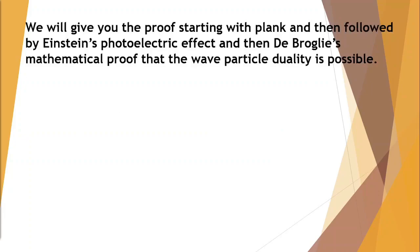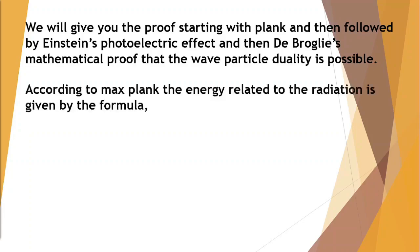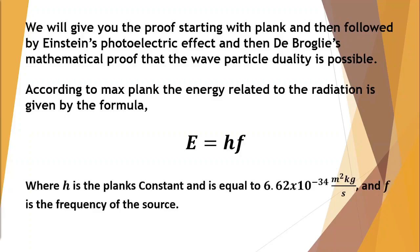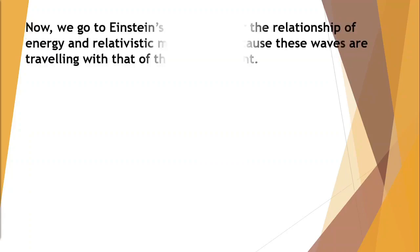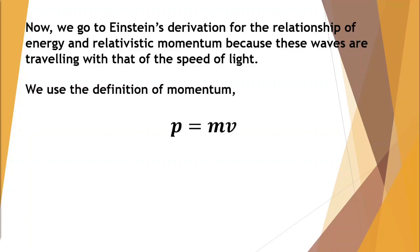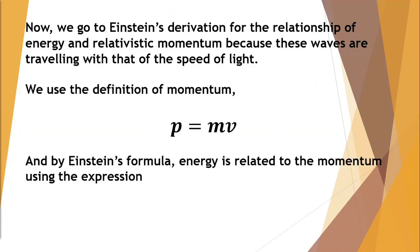We will give you the proof starting with Planck and then followed by Einstein's photoelectric effect and then de Broglie mathematical proof that the wave-particle duality is possible. According to Max Planck, the energy related to the radiation is given by the formula E = h*f, where h is the Planck's constant and is equal to 6.62 times 10 raised to the negative 34 meters squared kilogram per second, and f is the frequency of the source. Now we go to Einstein's derivation for the relationship of energy and relativistic momentum because these waves are traveling with that of the speed of light. We use the definition of momentum p = m*v, and by Einstein's formula energy is related to the momentum using the expression E = p*c, where c is the speed of light.